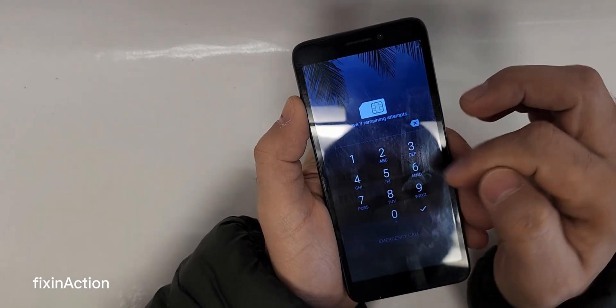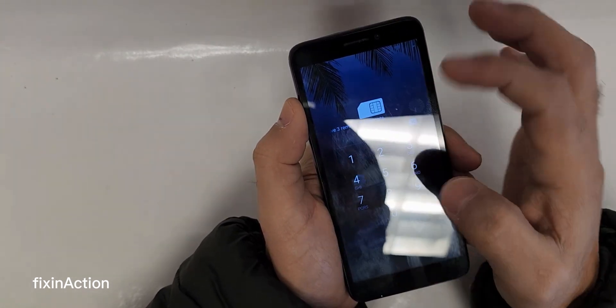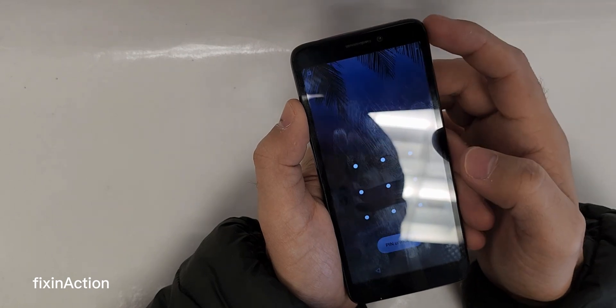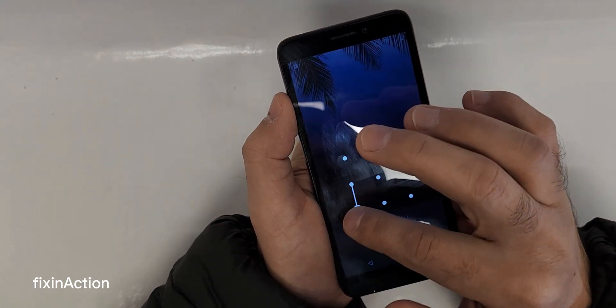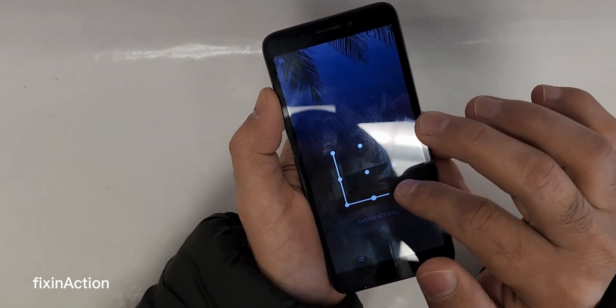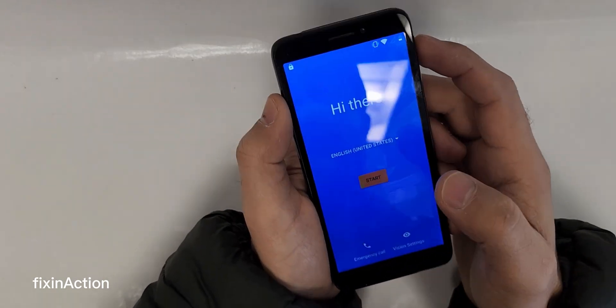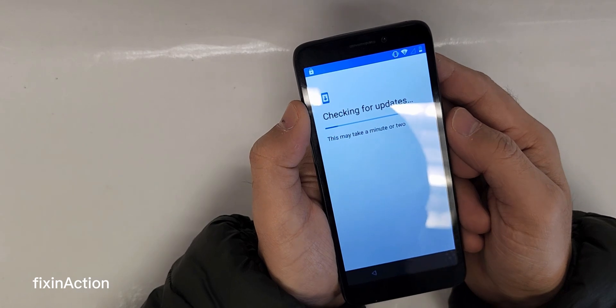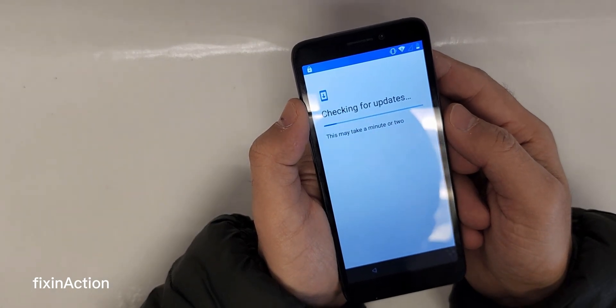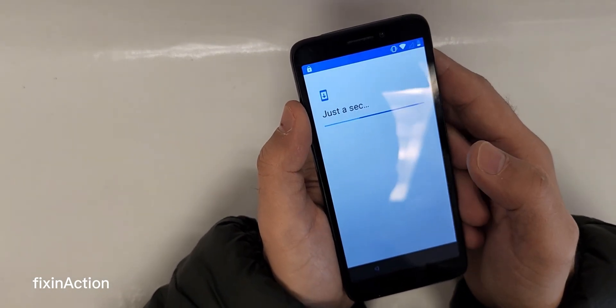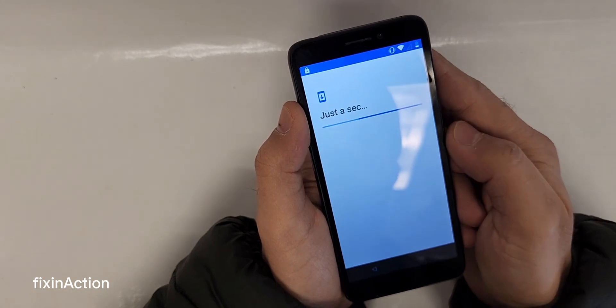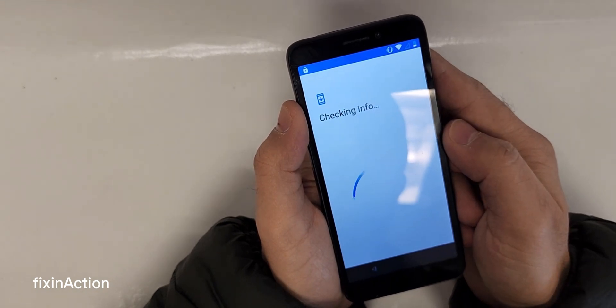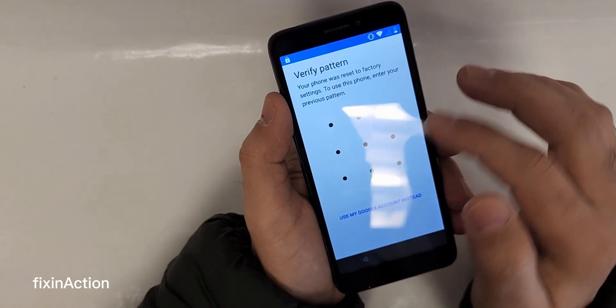We still have the SIM card inside, so we will just give the SIM card code. After that, it's asking for the pattern lock that we set up. Now let's start again and hopefully it won't ask us for the old Google account. Set up as new.